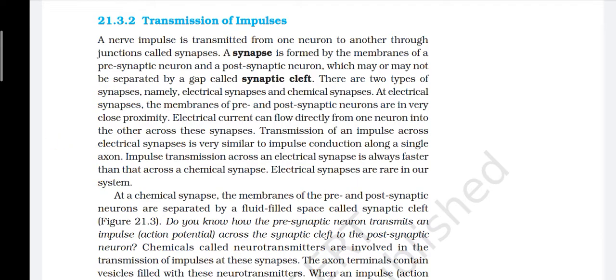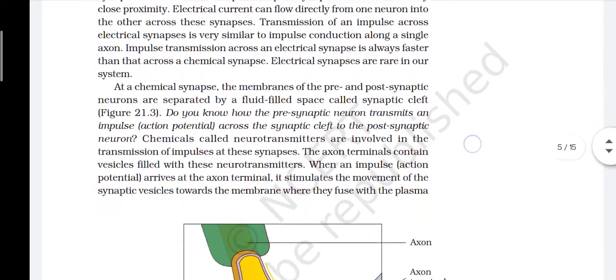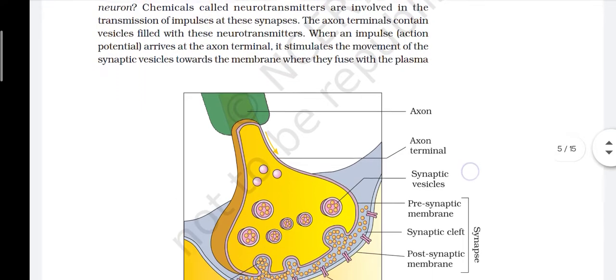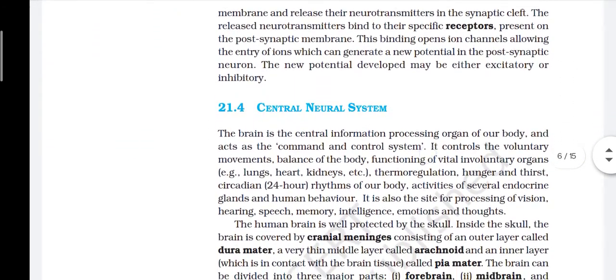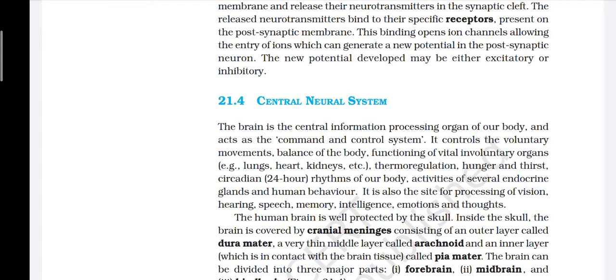At a chemical synapse, the membranes of pre- and post-synaptic neurons are separated by a fluid-filled space called the synaptic cleft. Chemicals called neurotransmitters are involved in the transmission of impulses at the synapses. The axon terminals contain vesicles filled with neurotransmitters. When an impulse arrives at the axon terminal, it stimulates the movement of synaptic vesicles toward the membrane, where they fuse with the plasma membrane and release their neurotransmitters into the synaptic cleft. The released neurotransmitters bind to their specific receptors on the post-synaptic membrane, opening ion channels and allowing entry of ions, which can generate a new potential in the post-synaptic neuron. The new potential may be either excitatory or inhibitory.